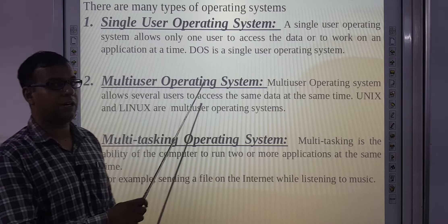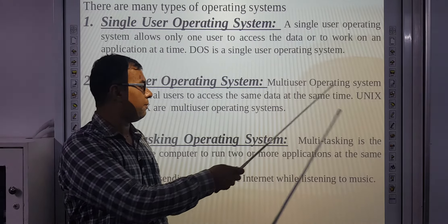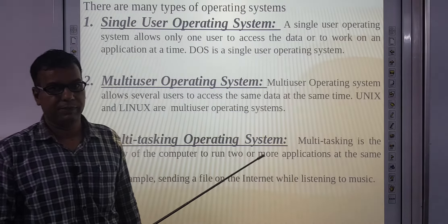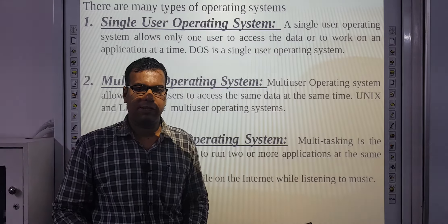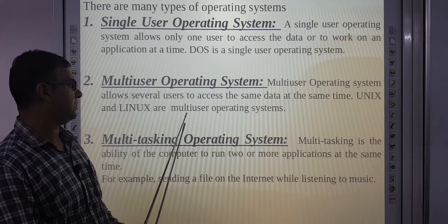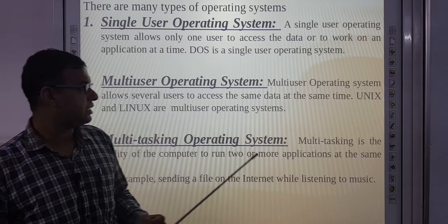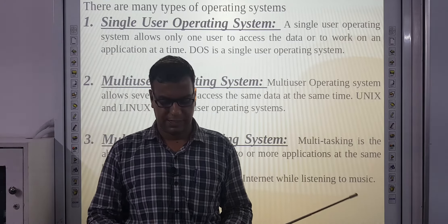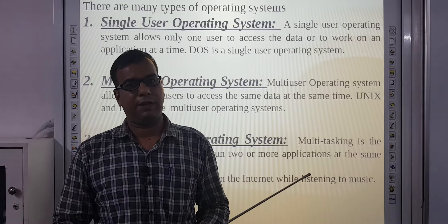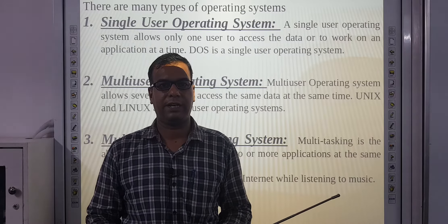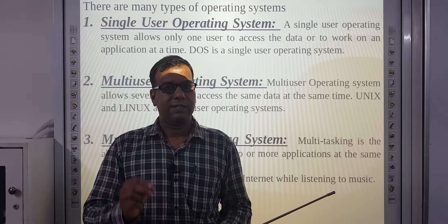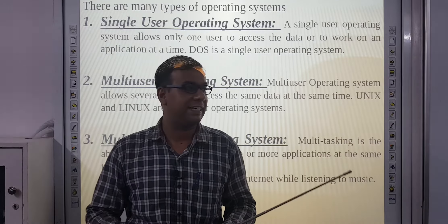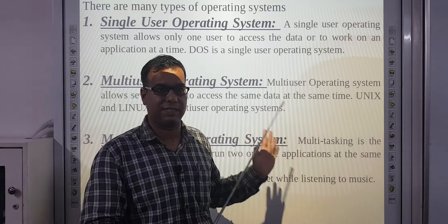Second is multi-user operating system. It allows several users to access the same data at the same time. Unix and Linux are multi-user operating systems. For example, our school's website — single time pe ek hi website hai, same data hai, but multiple students us ko dekh rahe hain — that is a multi-user operating system.